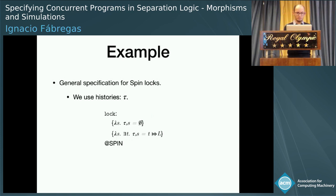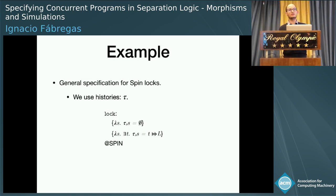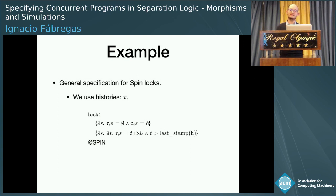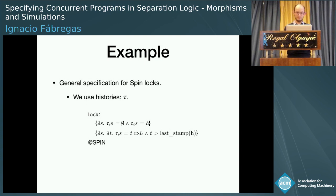A history is going to be just a timestamp that will give us an atomic operation — either lock or unlock. So this could be a very simple specification for lock. At the beginning, we don't have anything in our history. After performing a lock, we will have a new timestamp corresponding to a locking event. We will add tau representing the history for the other threads in our environment, and we can say the timestamp is new because it is greater than the rest of the timestamps.